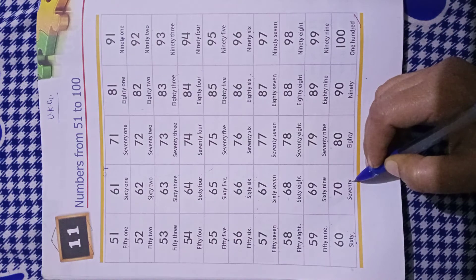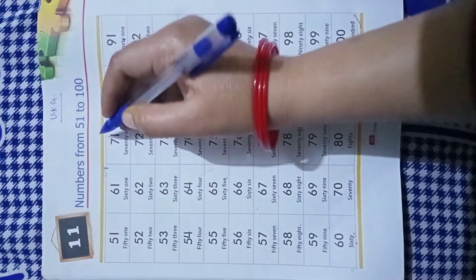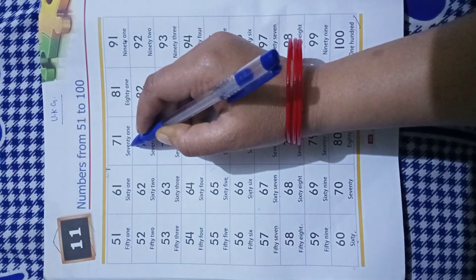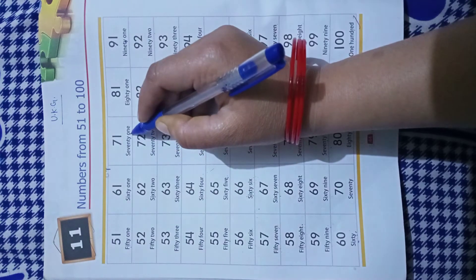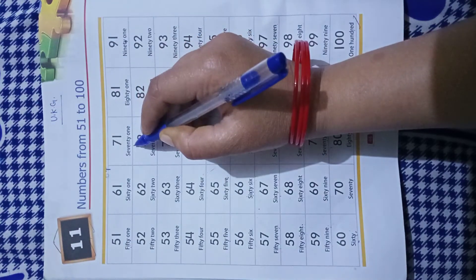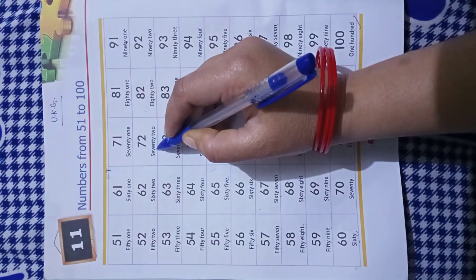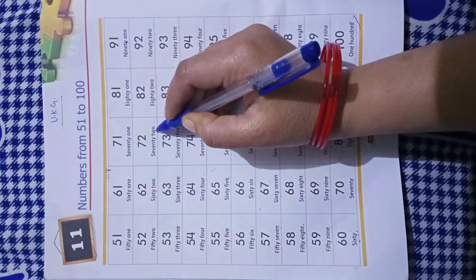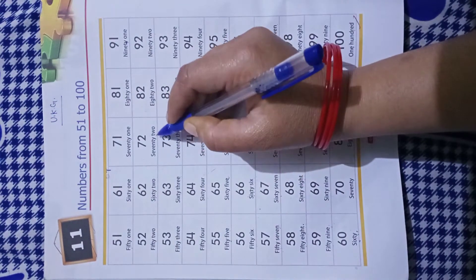SEVENTY-70, SEVENTY-70 ONE-1-71, SEVENTY-70 TWO-2-72.